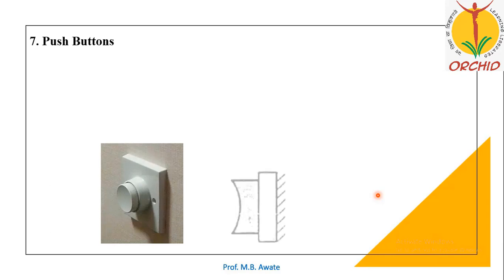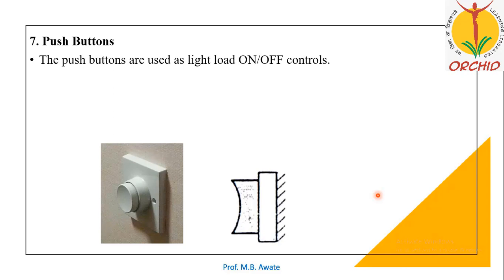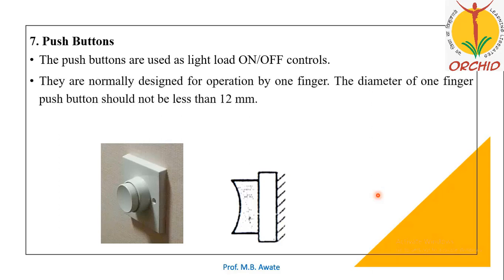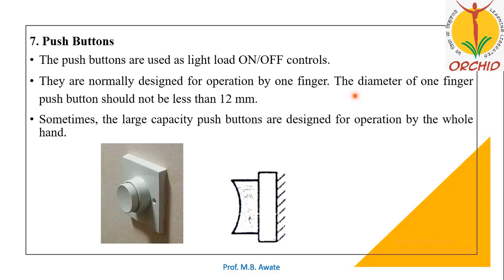Push buttons are used as light load only for on/off controls, and are normally designed for operation by one finger. The diameter of a one-finger push button should not be less than 12 mm. Large capacity push buttons are designed for operation by the whole hand, but those are used for large capacity.